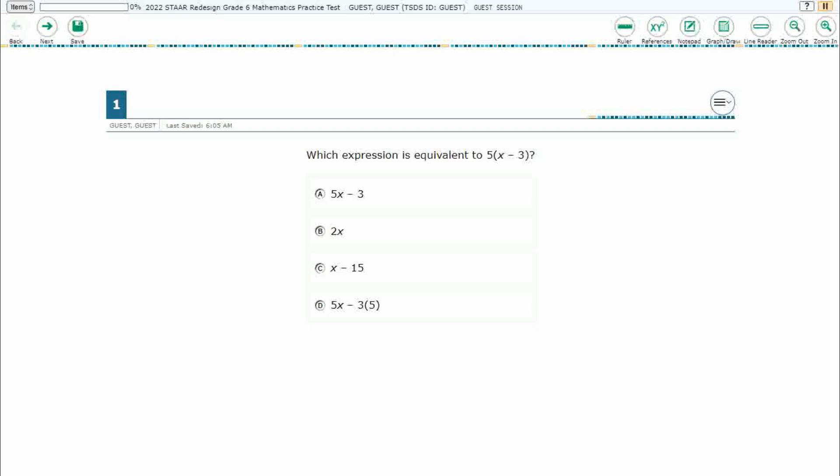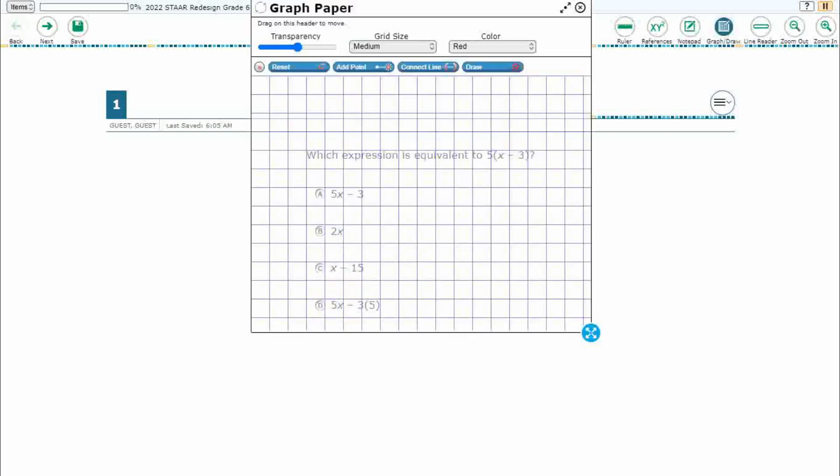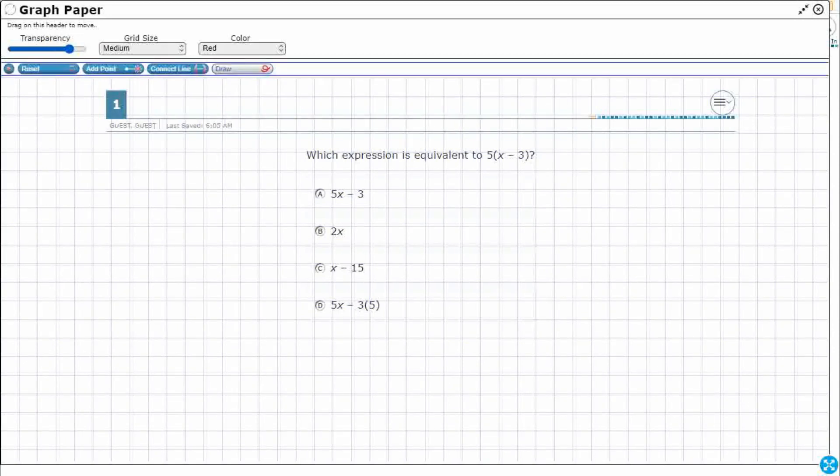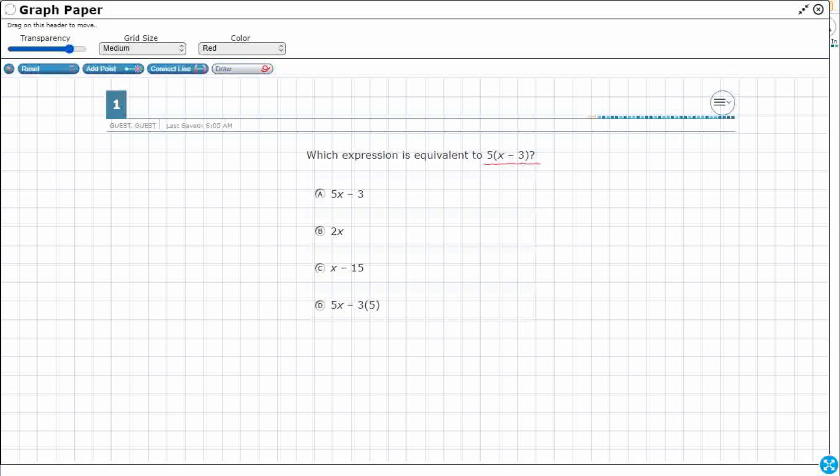We have this expression here, 5 parentheses x minus 3. We need to find an equivalent expression. So, let's open up our graph draw feature, expand it out here, increase the transparency so we can see what's going on behind here, and we'll use draw. This is a very important property of operation that you're going to use all throughout 6th grade, and quite honestly, the rest of your mathematical career. And this is a visualization of something that we like to call the distributive property.